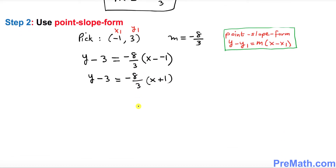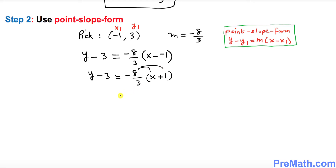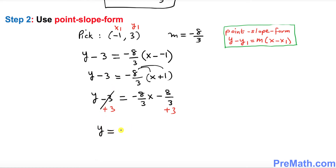Now distribute: this becomes negative 8/3 x minus 8/3, with y minus 3 on the left side. We want to isolate y, so add 3 to both sides — the minus 3 cancels. We get y equals negative 8/3 x, and now we need to add negative 8/3 and 3. Adding 3 is the same as 3 over 1.